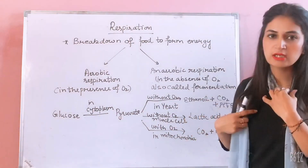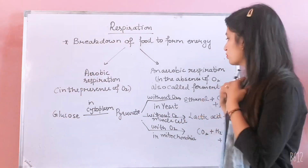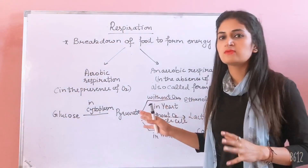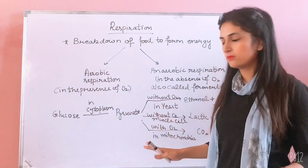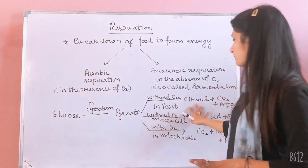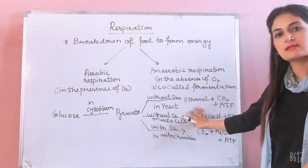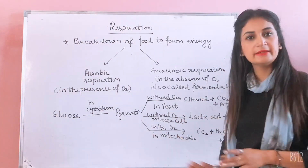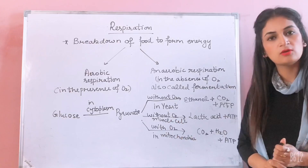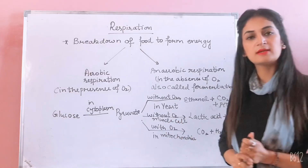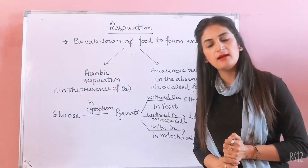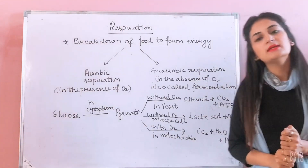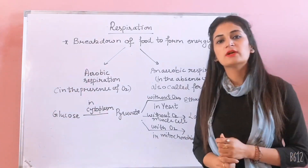Pyruvate in the absence of oxygen — in anaerobic conditions — the byproducts will be ethanol, carbon dioxide, and ATP. What is ATP? ATP is a unit of energy. Like we use a meter or kilometer to measure length, if we have to measure energy, it is measured in the form of ATP.